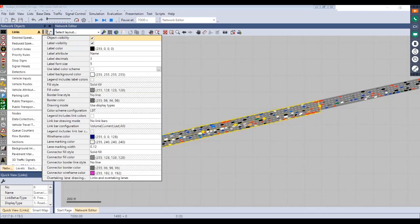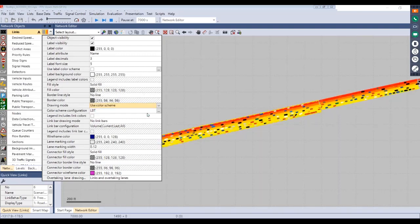One way that this can be visualized is through the graphic parameters. If you just select this little colored box next to link, I'm just going to briefly change the drawing mode here to use a color scheme.